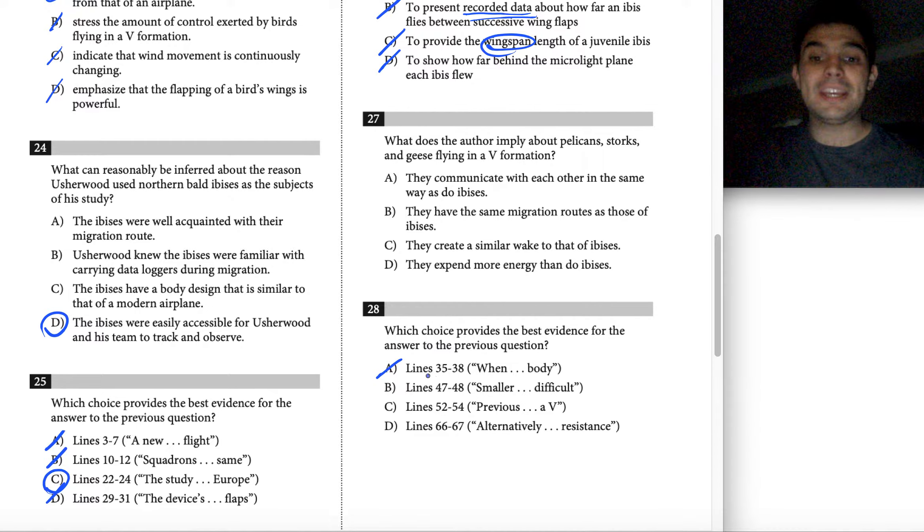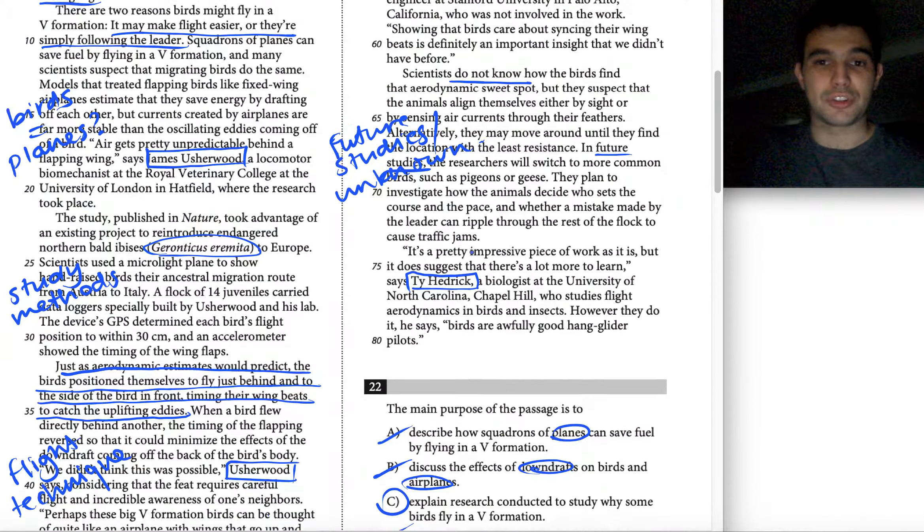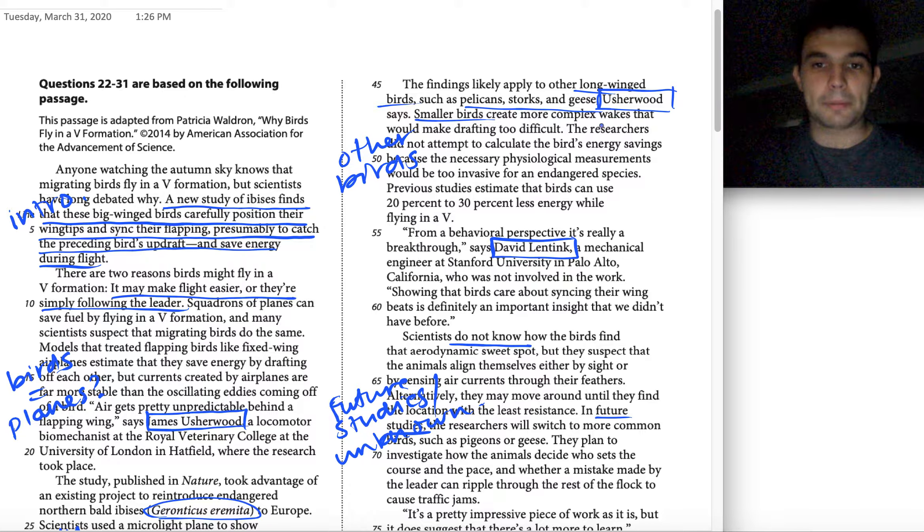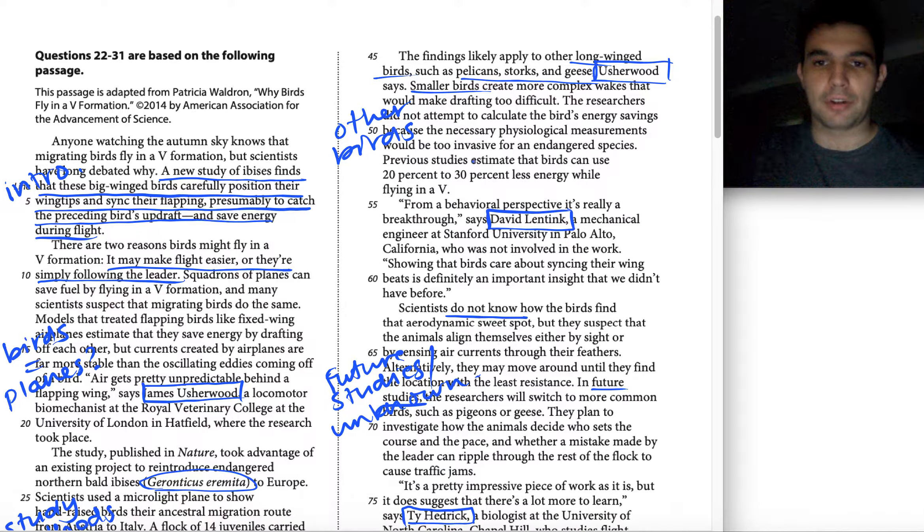Choice B is in the right paragraph. Let's see what it says more specifically. Smaller birds create more complex wakes that would make drafting too difficult. The sentence is a little bit hard to understand, so I might also read this previous sentence and get a sense for, okay, we're talking about the wakes, we're comparing the wakes of these larger birds and smaller birds. This feels relevant to me, right? We're talking about those larger birds, and we're implying something by talking about how they relate to smaller birds. So choice B is definitely a front runner right now.